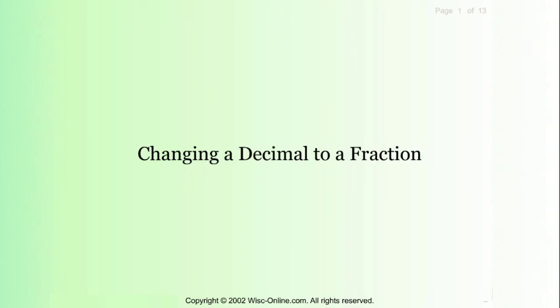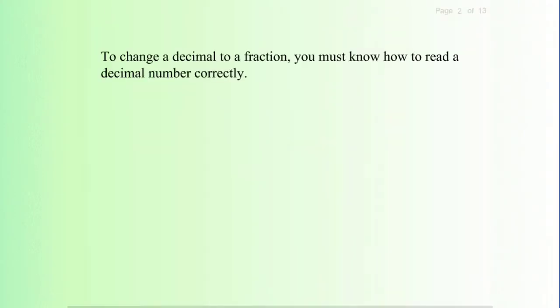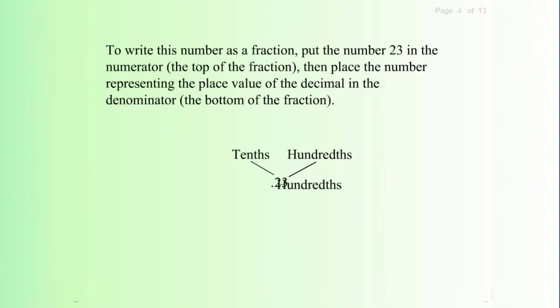Changing a decimal to a fraction. To change a decimal to a fraction you must know how to read a decimal number correctly. Point two three (.23) is twenty-three hundredths. To write this number as a fraction, put the number 23 in the numerator.